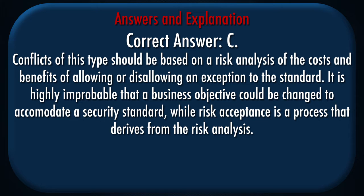Correct answer: C. Explanation: Conflicts of this type should be based on a risk analysis of the costs and benefits of allowing or disallowing an exception to the standard. It is highly improbable that a business objective could be changed to accommodate a security standard, while risk acceptance is a process that derives from the risk analysis.